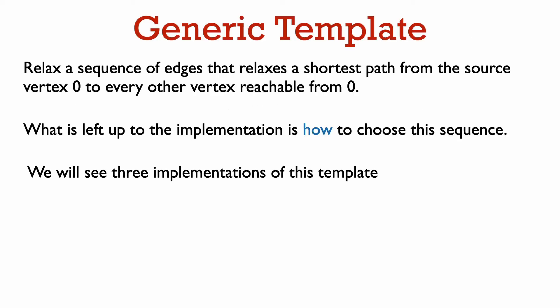This is the generic template: we repeatedly pick an edge and relax it. We want to choose a sequence of relaxations so that we relax a shortest path from the source vertex 0 to every other vertex reachable from 0. What's not specified in the generic template is how to choose this sequence of relaxations. We're going to look at three implementations that choose this sequence in different ways and work in different kinds of graphs.